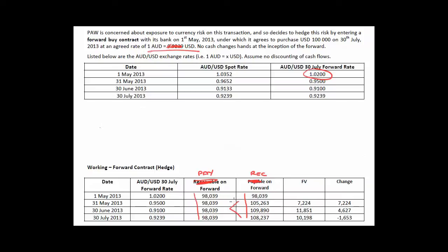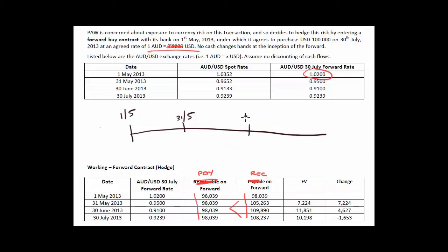What we're interested in is why these numbers stay the same and why these numbers change. The best way to look at that is to draw a timeline. So we have the 1st of May, the 31st of May, the 30th of June, and the 30th of July. It's at this point we enter into the hedge and at this point the position gets closed out. This company has entered into a buyer position.